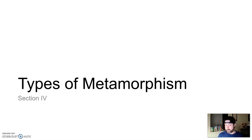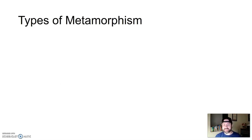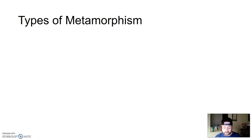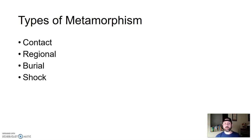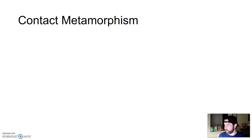Welcome back. This should be our last one. So, different types of metamorphism — these are different ways in which we can apply heat and pressure to change a protolith into a metamorphic rock. There are four different ways: contact metamorphism, regional metamorphism, burial metamorphism, and shock metamorphism. We'll go through all of these.